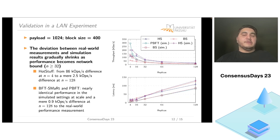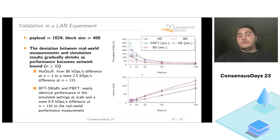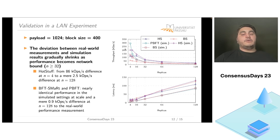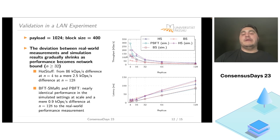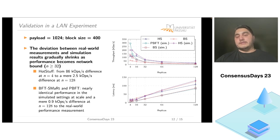Our first experiment replicates one from the HotStuff paper, where we gradually scale up the number of replicas from 4 to 128. The replicas are co-located in the same data center — a LAN setting — with a payload of 1024 bytes and a block size of 400. Comparing simulated HotStuff (diamond markers) to real-world HotStuff (triangle markers), at 4 replicas we observe a relatively large performance difference of around 86k ops/second. However, this difference gradually shrinks as system scale grows. For PBFT and BFT-Smart we observe a similar pattern.